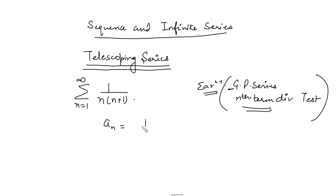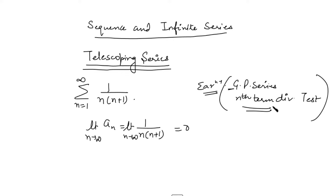The nth term here is 1 over n(n+1). When you find the limit of this as n goes to infinity, it goes to 0. So the nth term divergent test is also not applicable here, because whenever the limit of the nth term is 0, we can't determine the behavior of the series. We have to apply another test — the sequence of partial sums.